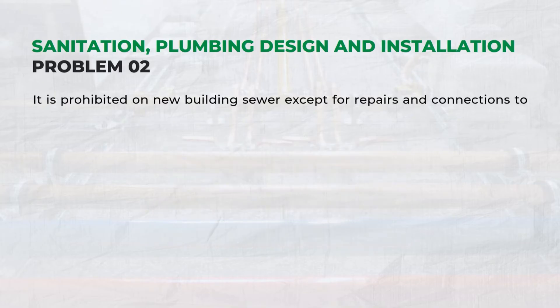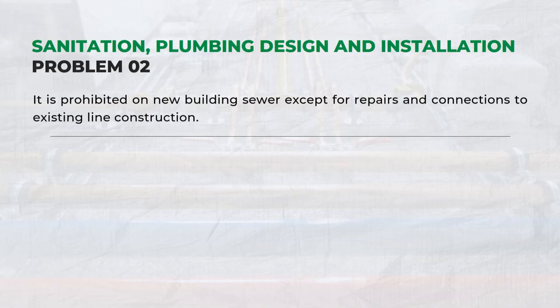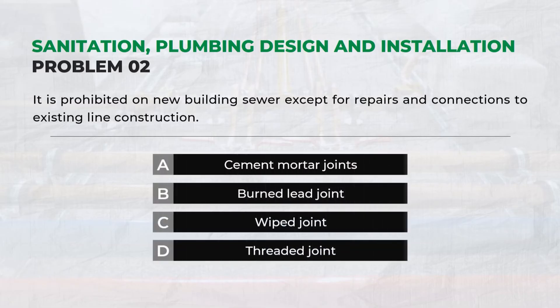It is prohibited on new building sewer except for repairs and connections to existing line construction — Answer: A. Cement Mortar Joints.